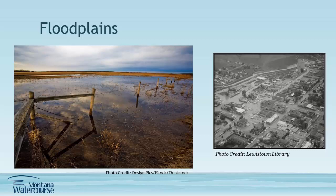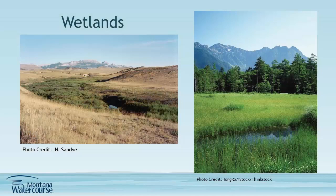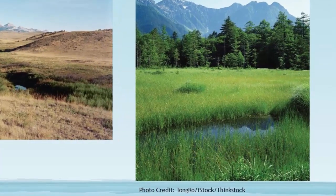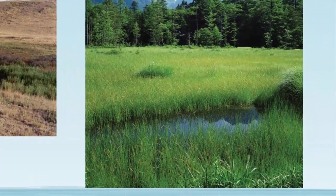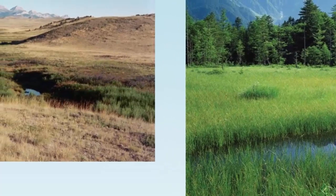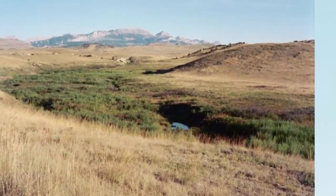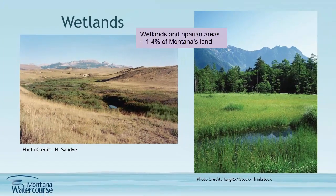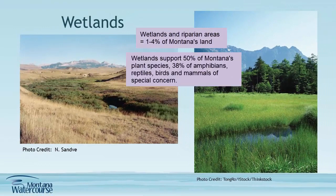Floodplains also play an important role in recharging aquifers, and they provide habitat to support diverse populations of plants and animals. Wetlands are areas of land that are saturated by water for part or all of the year, and have unique soil characteristics and plants. Many animals depend on wetlands for homes and resting spots. Fish, amphibians, reptiles, aquatic insects, and certain mammals need wetlands as a place for their young to be born and grow. Although wetlands and riparian areas only cover 1–4% of Montana, these places support half of Montana's plant species and 38% of amphibians, reptiles, birds, and mammals of special concern.